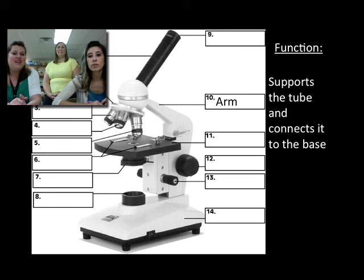This is the arm. We also spoke about this in the previous video - you're supposed to hold one hand on the arm to pick up and one hand on the base. The arm supports the tube and connects it to the base of the microscope.